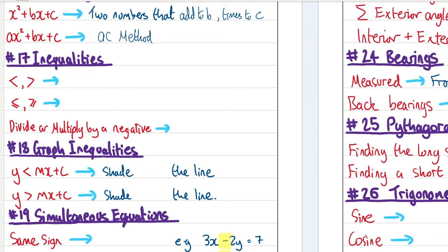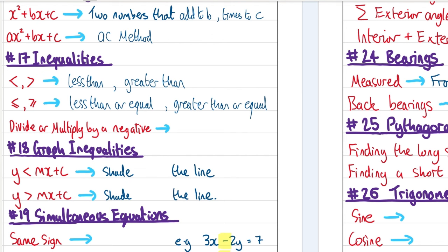Inequalities. The symbols: pointing left means less than, pointing right means greater than. A line underneath means less than or equal to, or greater than or equal to. If you divide or multiply by a negative number, the inequality sign flips — so less than changes to greater than, and vice versa.